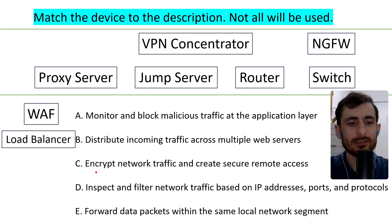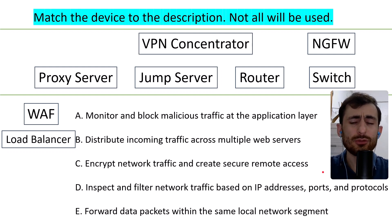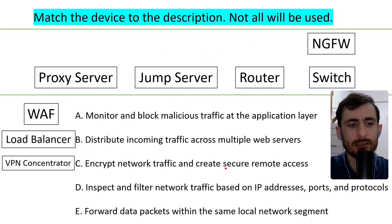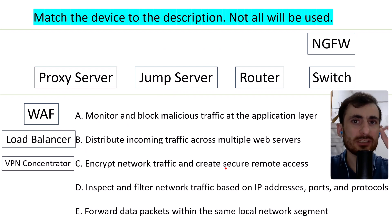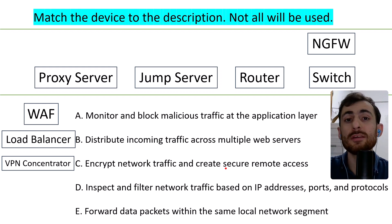Option C: encrypt network traffic and create secure remote access. This should be an easy one — it's the VPN concentrator. We also had a specific question on the VPN concentrator in our previous PBQ, so check that out as well.